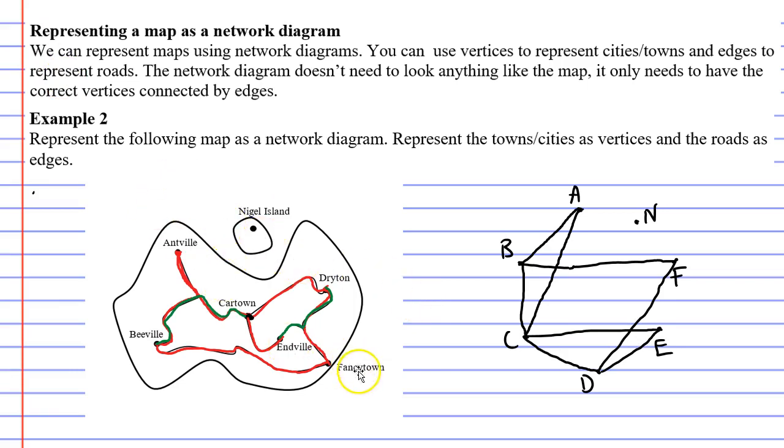All right, now focusing on Antville, I can see that Antville can get to fancy town without passing through any other towns. So E is connected to F, and we already know it's connected to car town and Dryton.